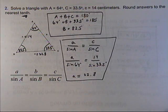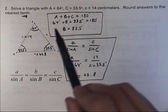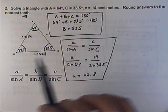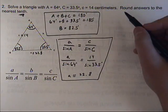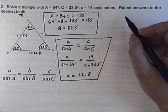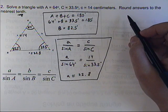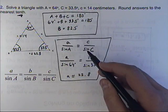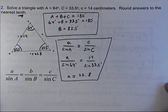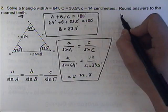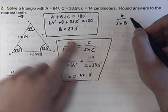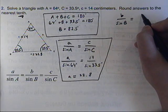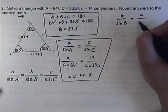Now for the third side, we're going to have to use the Law of Sines again. We cannot use the Pythagorean theorem, because this is not a right triangle — it's an oblique triangle with no right angle corners. So I'm going to find side B last, and I could use either of the two known fractions as the other one.